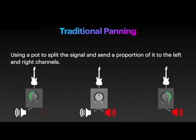Traditional panning uses a pot to split the signal and send a proportion of it to the left and to the right channel. In the example shown, here's a guitar going to the left channel, here's a guitar going to the centre channel, and here's a guitar going to the right. As you can see, it kind of feels weird when the signal is only being sent to one side.